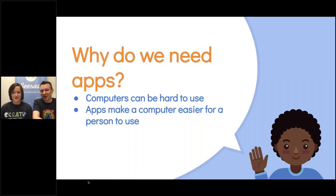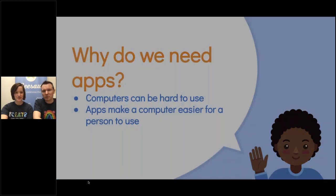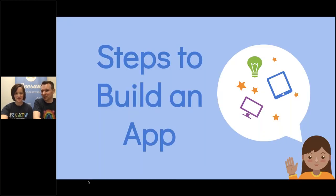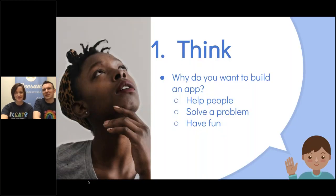So when we think about a computer, there are certain things that can be very hard to do with a computer. And when we build an app, we try to take some problem that someone has and make it much easier for a real person to use. So let's talk about the steps to build an app today. The first step is always to take a moment and think about why you want to build your app. Is it to help people? Is it to solve a problem? Are you just wanting to have fun? Like maybe you want to make a game?